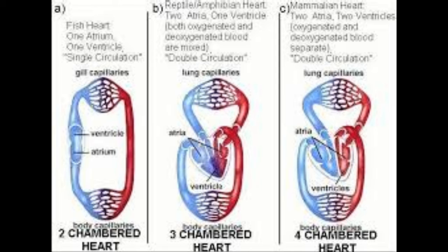In a three-chambered heart, there is only one ventricle, so mixing of pure and impure blood occurs and the organism does not get sufficient oxygen. But with a four-chambered heart, all chambers are separated — oxygenated and deoxygenated blood are separated — and hence the organism gets sufficient oxygen for energy. This is the mechanism of blood circulation.